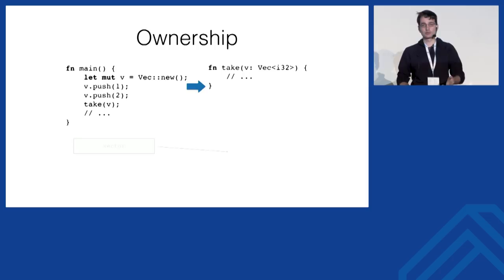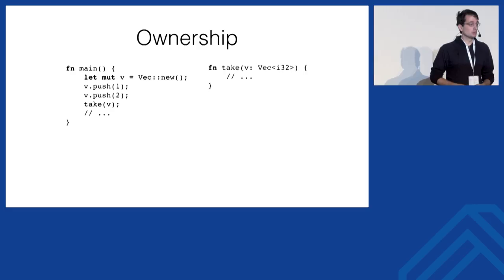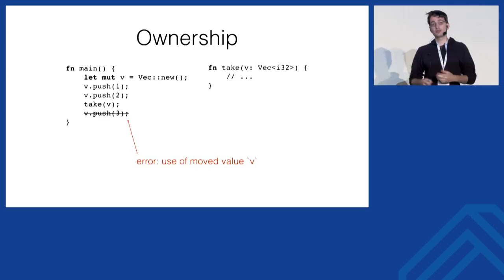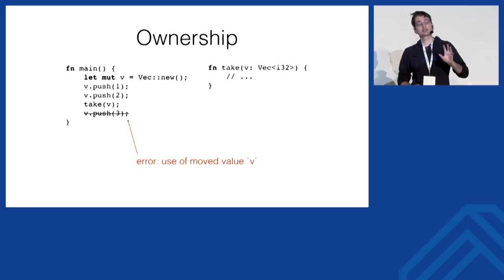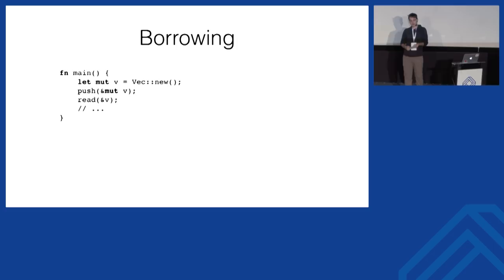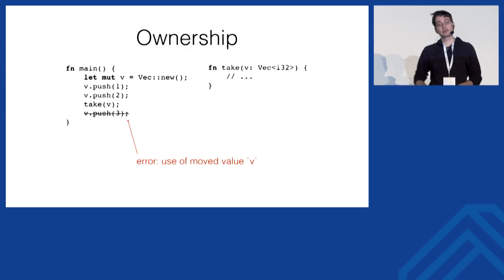When we come back to the function main, it no longer has access to the vector — it has relinquished ownership. If we tried to add an extra push after transferring ownership, the Rust compiler rejects this with 'use after move of an owned value.' This is a static analysis happening at compile time, preventing you from using anything after you have moved it. You have one owner, you can transfer ownership, and as the owner you can drop, deallocate, and free the data.